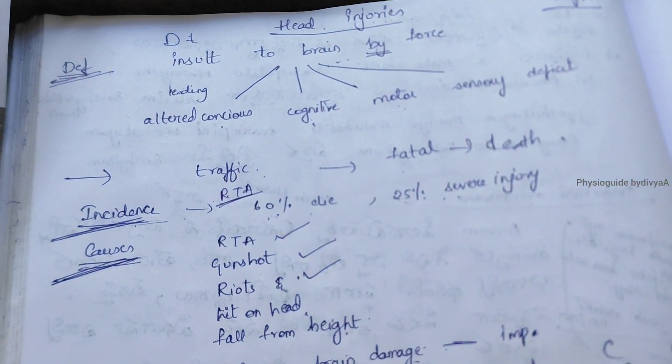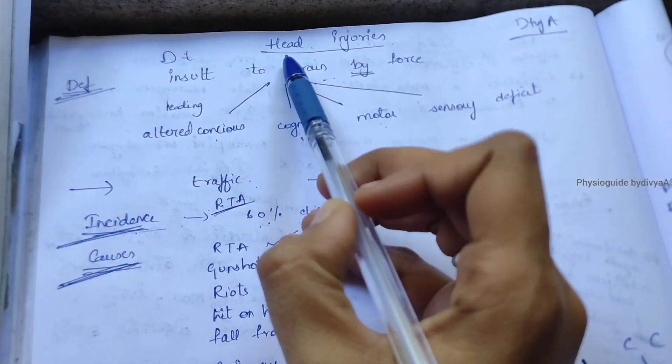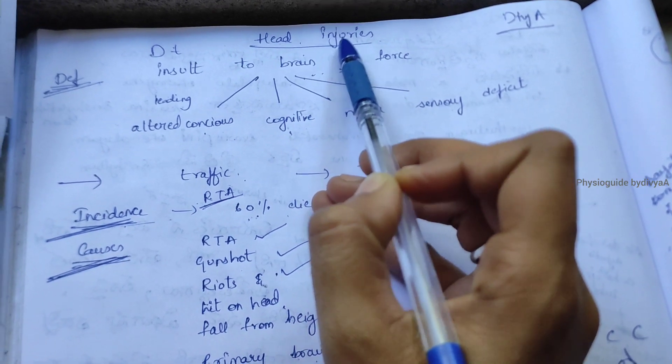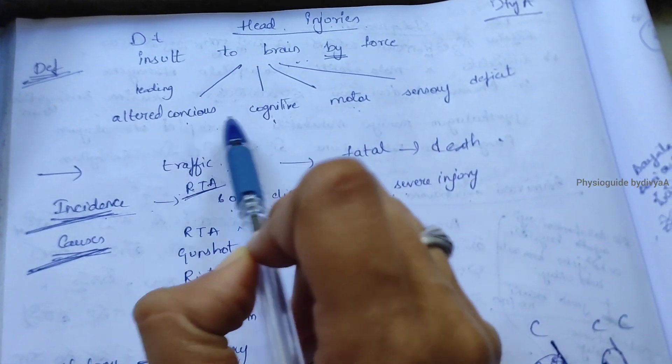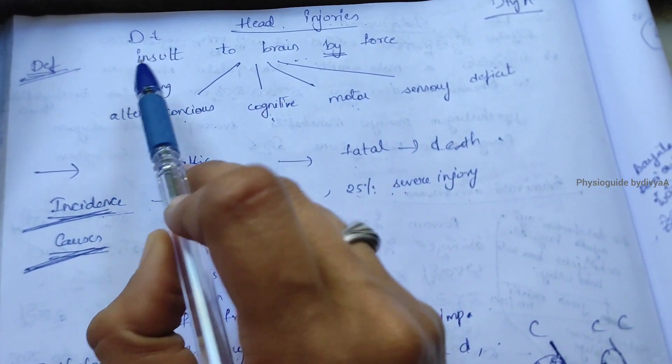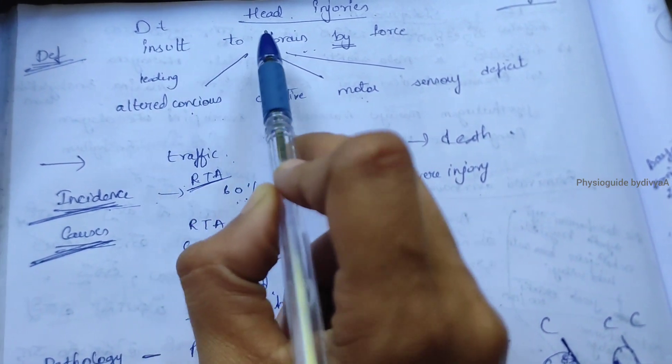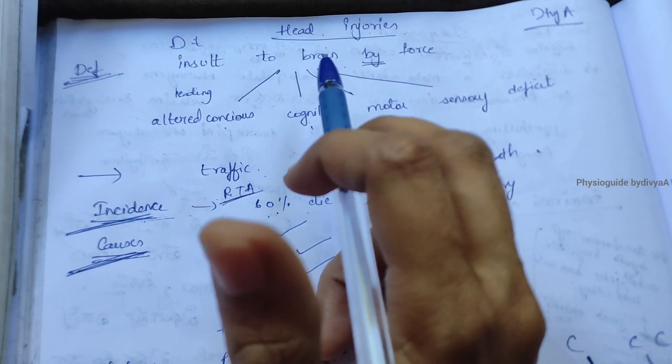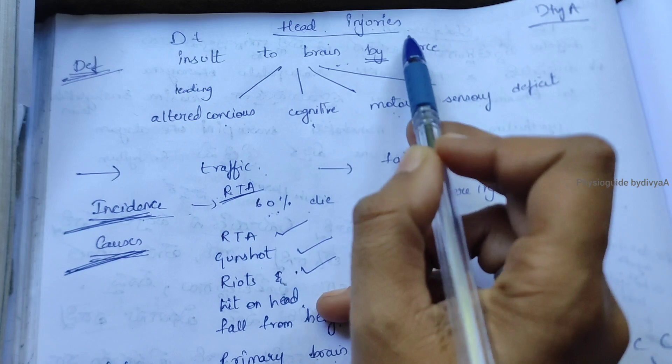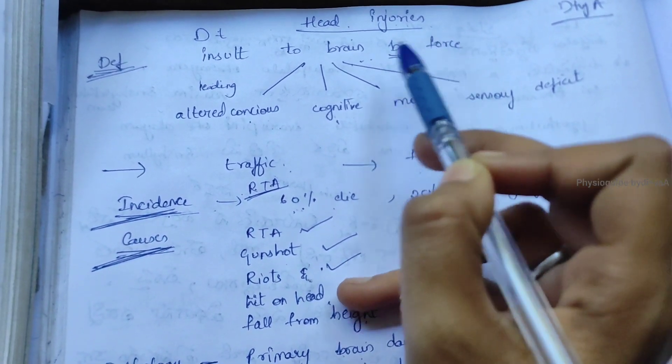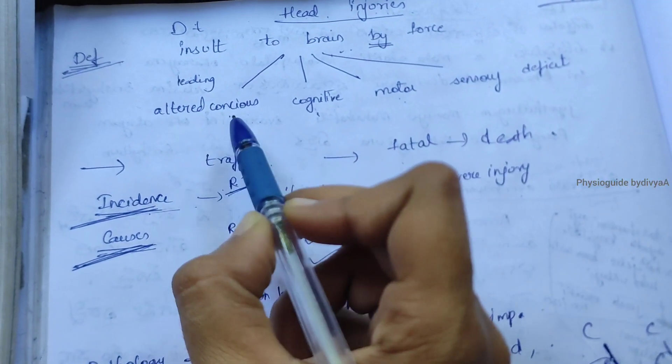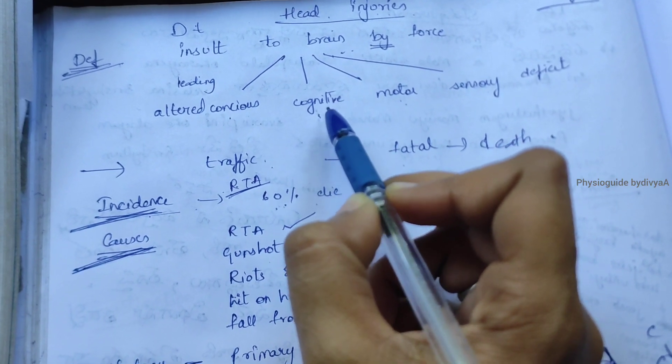Hello people, welcome to my channel Physio Guide by Divya. Today I am going to teach about head injuries. Head injury is an insult, meaning damage to the brain, caused by external physical force that leads to altered consciousness and cognitive problems.